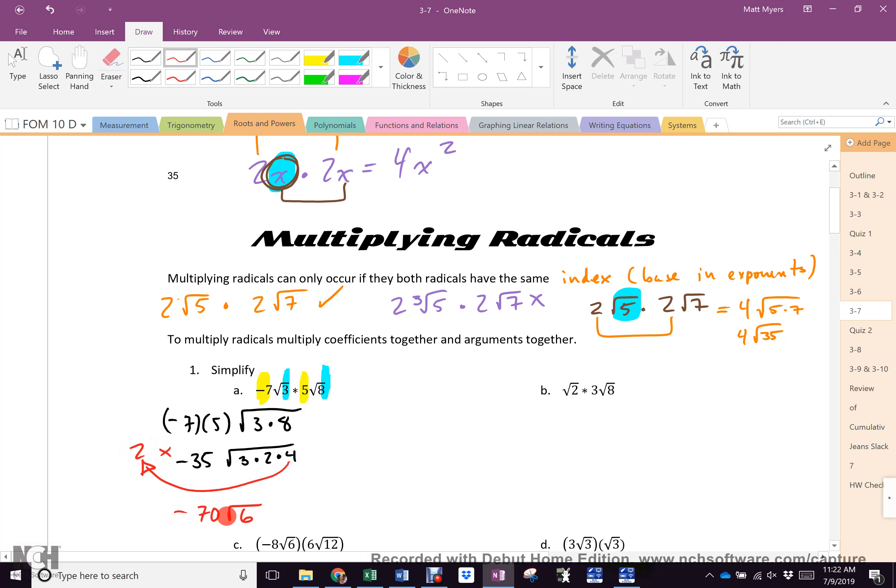So, I get negative 70. And what did I leave under there? 3 and 2, which is 6. Because 6 is easier than saying 3 times 2. If you stopped here, negative 35 root 24, then it's not simplified. Because 24 is 4 times 6. And you would bring out a 2.